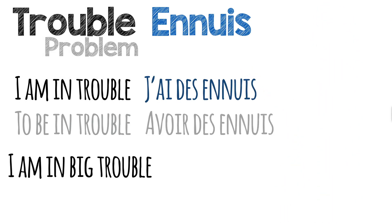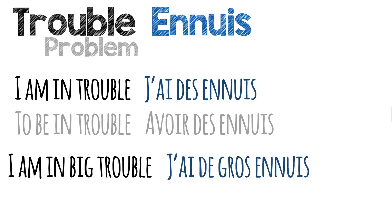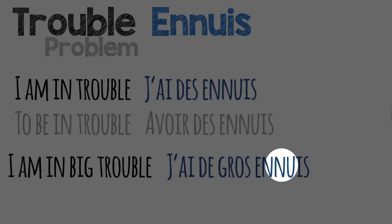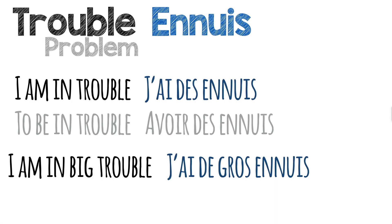Let's add an adjective — the adjective 'big' in our sentence — and we have 'I am in big trouble.' The translation is: J'ai de gros ennuis. The difference is in the first sentence we've got 'des,' and here we've got 'de.' Why? When the adjective, like 'gros,' is before the noun, we use 'de.' If it's after, we use 'des.' For example, J'ai des ennuis importants — here we say 'des.' But J'ai de gros ennuis because 'gros' is before 'ennuis.'